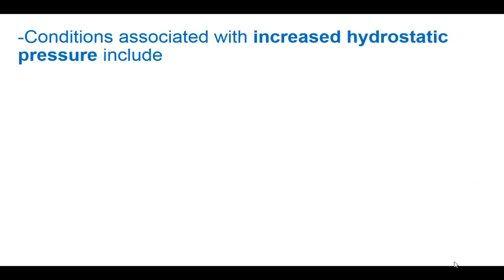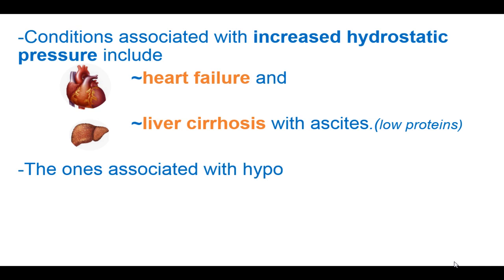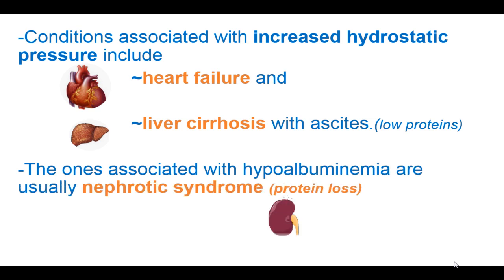Conditions associated with increased hydrostatic pressure include heart failure and liver cirrhosis with ascites. In the case of liver cirrhosis, there is low production of proteins. Conditions associated with hypoalbuminemia, or low albumin in the blood, include nephrotic syndrome, whereby there is protein loss or leakage into the urine.